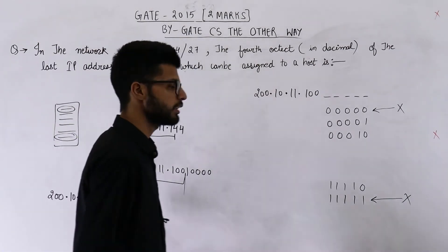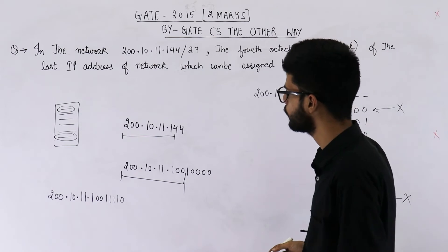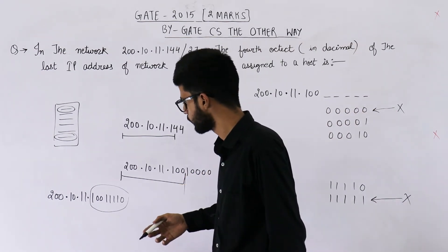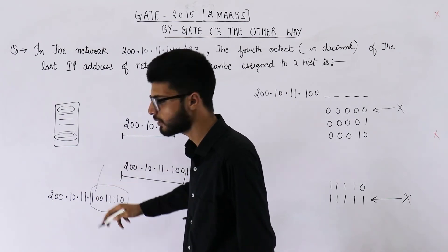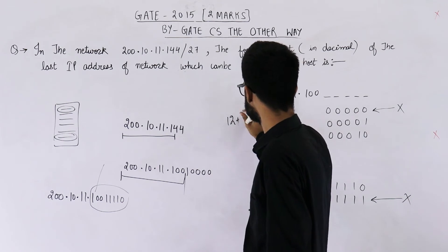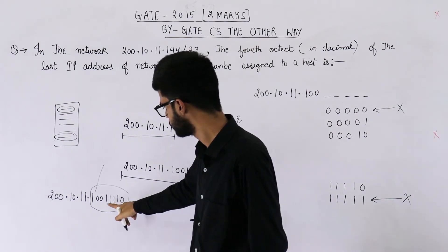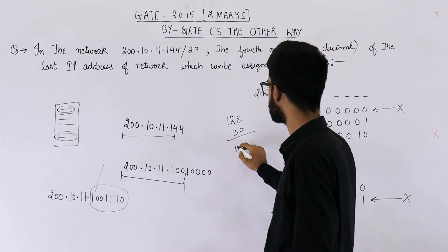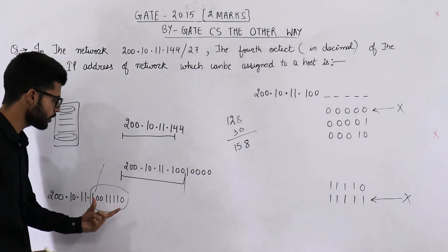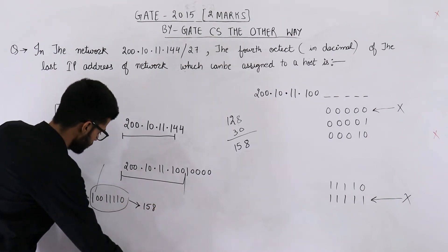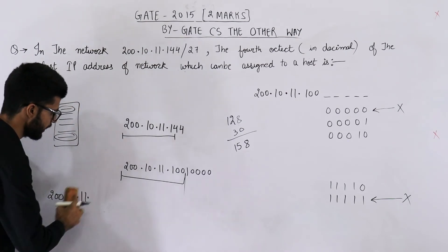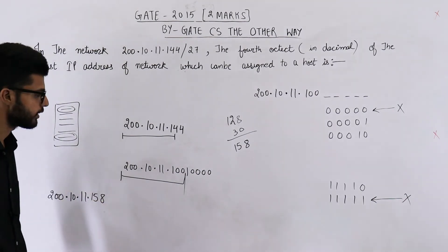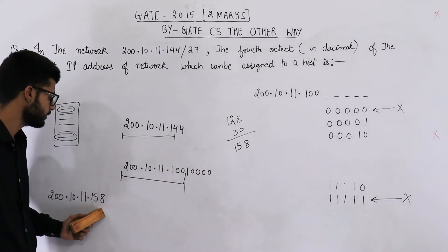So if we just try to convert it to decimal — they are asking what is the last octet of this IP address. The last octet is 10011110. We just need to convert this number into decimal. The first bit represents 128, plus 15 into 2, which is 30. So 128 plus 30 equals 158. If you convert this number into decimal you get 158. That means the last IP address that can be assigned to any host is 200.10.11.158. The answer to this question is 158, because the last octet in decimal is 158.